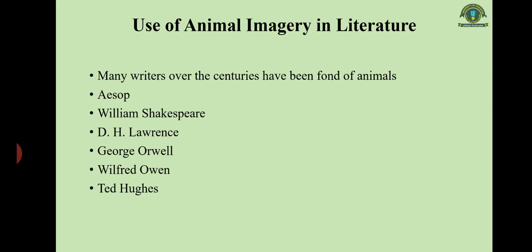Many writers over the centuries have been fond of the use of animal imagery. We have the very old and classical name of Aesop — Aesop's Fables, which represent the stories of human beings through animals. Then the very big name William Shakespeare also depicted animals, not that he was very focused on animals, but he used animal imagery to give insight into human behavior and psychology. We find abundant use of animal imagery in Shakespeare's Othello and King Lear — King Lear mentions around 55 animals in 135 different references.